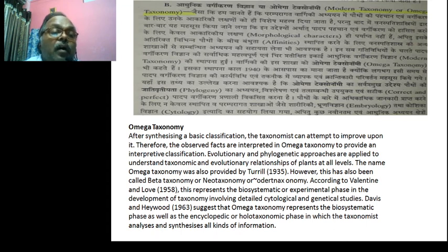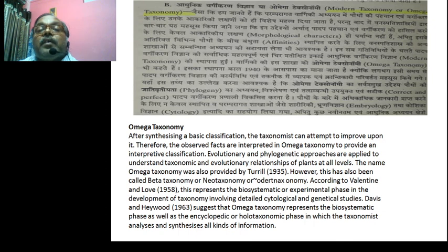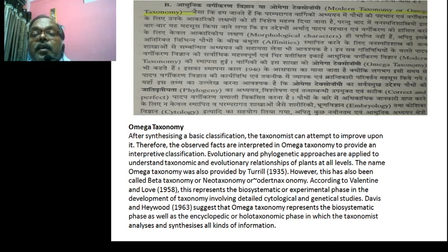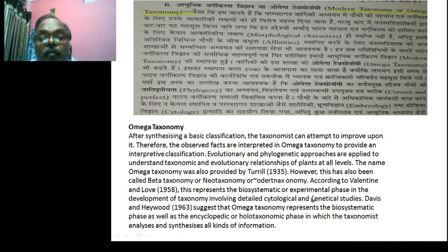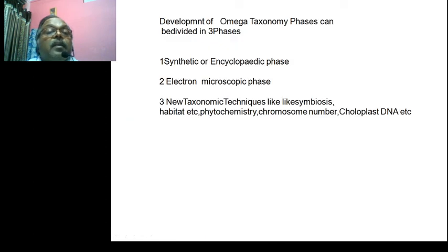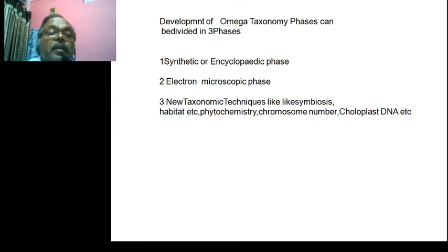After the phase of alpha and beta, then comes omega, which can also be called the modern organ approach. In the traditional approach, we have used embryology, cytology, and other branches, which can also be called modern taxonomy — an evolutionary phylogenetic approach, with cytological and genetic studies. The omega phase is a synthetic and encyclopedic phase, then the electron microscopic phase, which now includes new taxonomic techniques.